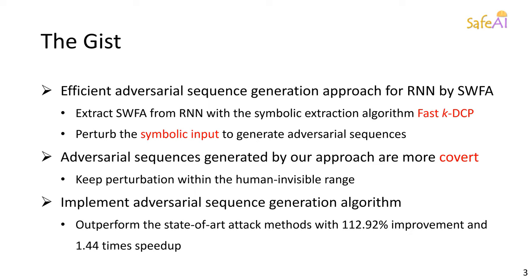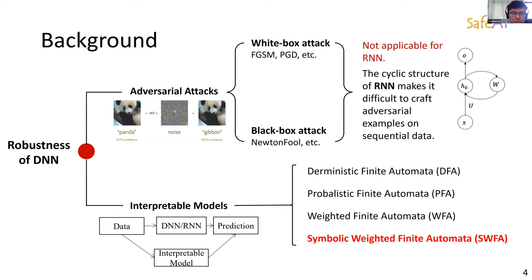The background: robustness of DNNs is a focus of recent research. It can be branched into two parts: adversarial attacks and interpretable models. Black-box and white-box attacks are important components of adversarial attacks, such as FGSM, EGD, Newton-4, etc. But these attack methods are not applicable for RNN. Interpretable models can take many forms such as DFA, PFA, WFA, and SWFA. In summary, we choose SWFA to deal with the problem of crafting adversarial examples.